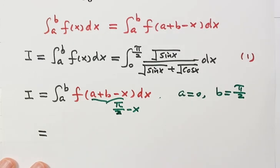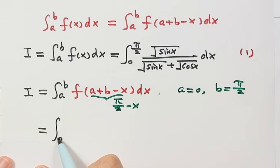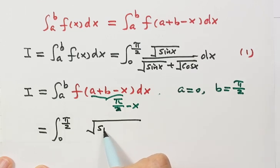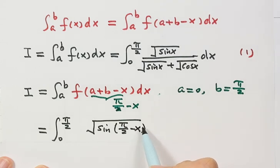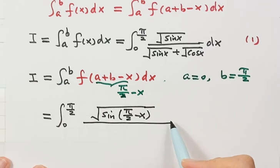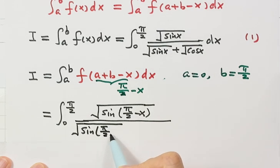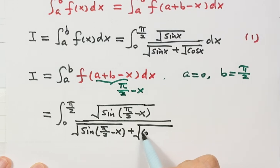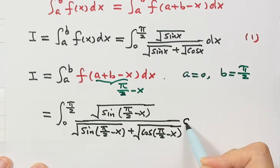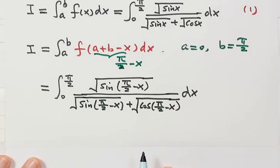After applying the substitution, we get the integral from zero to π/2 of sin(π/2 − x) divided by (sin(π/2 − x) + cos(π/2 − x)) dx.